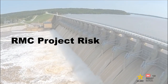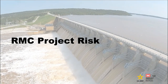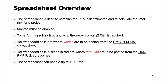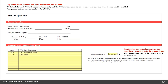The RMC Project Risk spreadsheet is used to calculate the marginal risk for each potential failure mode and to combine these risks to calculate the total risk. As with the other spreadsheets, macros must be enabled and the Excel add-on at-risk is required to run a probabilistic analysis. The yellow shaded cells are where values are to be pasted from the RMC PFM Risk spreadsheet. Yellow shaded cells outlined in red are where formulas are to be pasted from the RMC PFM Risk spreadsheet. The spreadsheet can accommodate up to 10 potential failure modes. Starting on the cover sheet tab, input PFM numbers and short descriptions for the failure modes into the table. Worksheets for each potential failure mode will appear automatically. Next, select the vertical datum from the dropdown menu — the elevation data must be consistent across all spreadsheets.